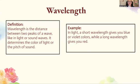Wavelength is the distance between two peaks of a wave, like in light or sound waves. It determines the color of light and the pitch of sound. In light, a short wavelength gives you blue or violet colors, while a long wavelength gives you red.